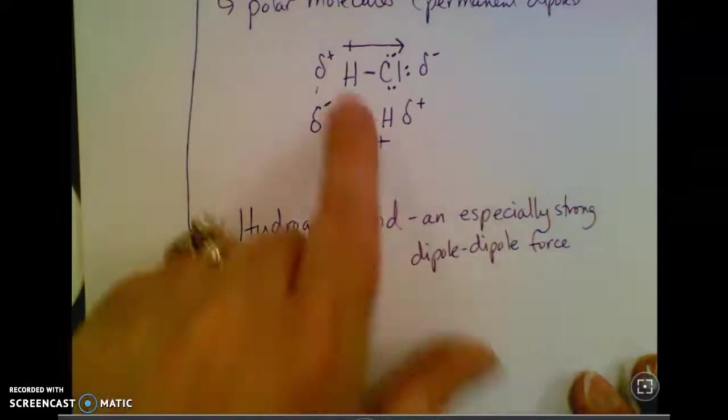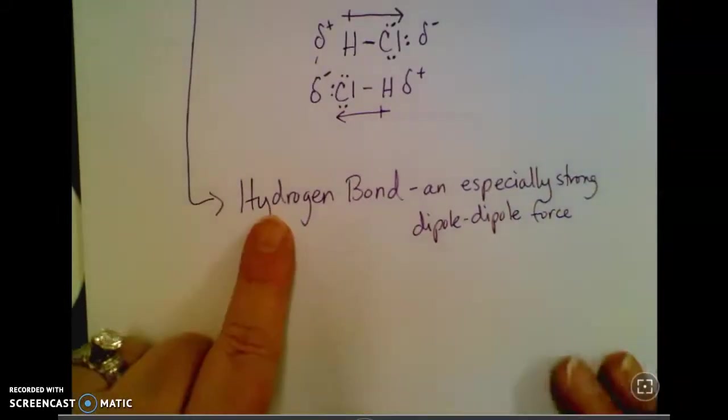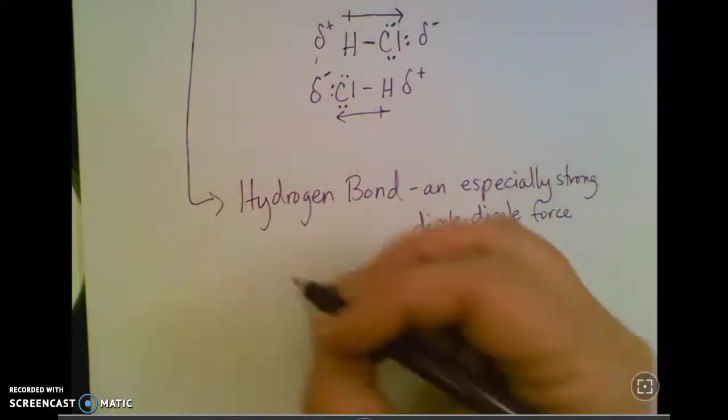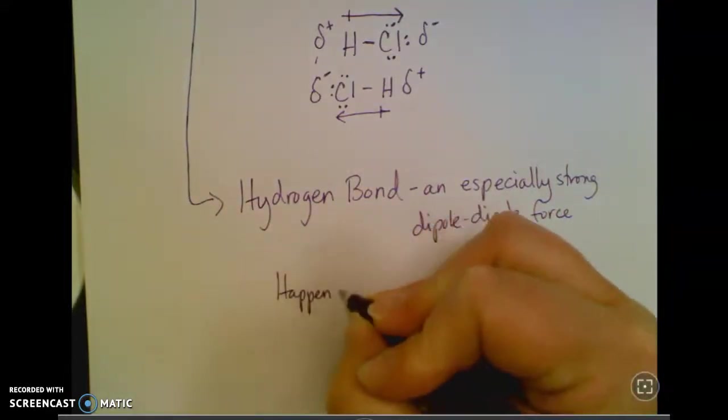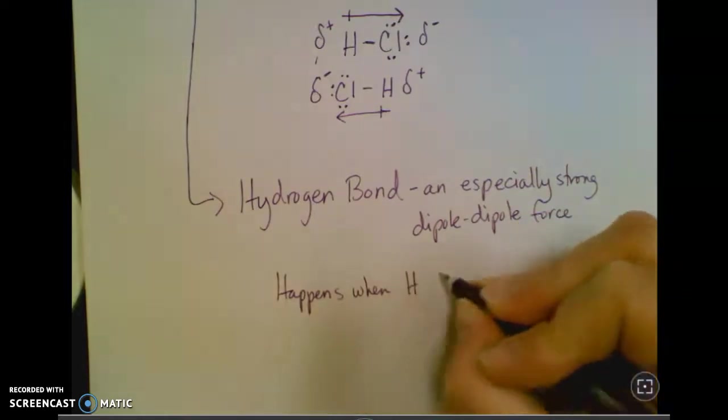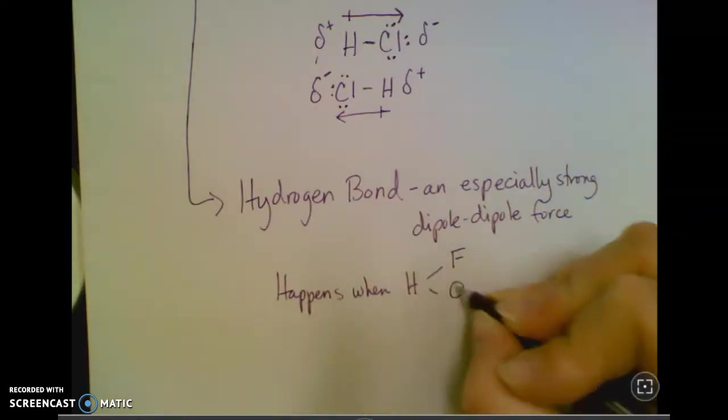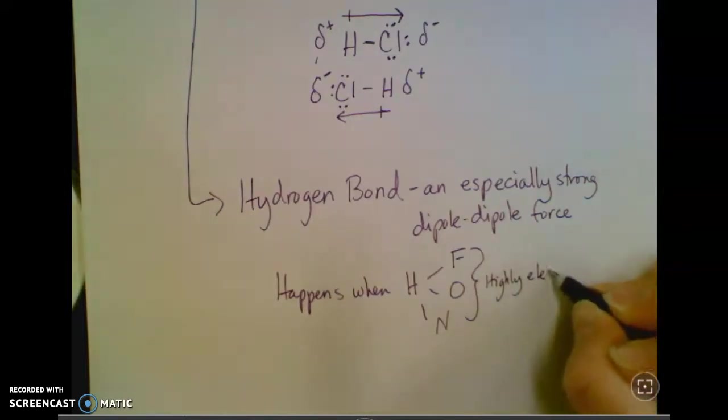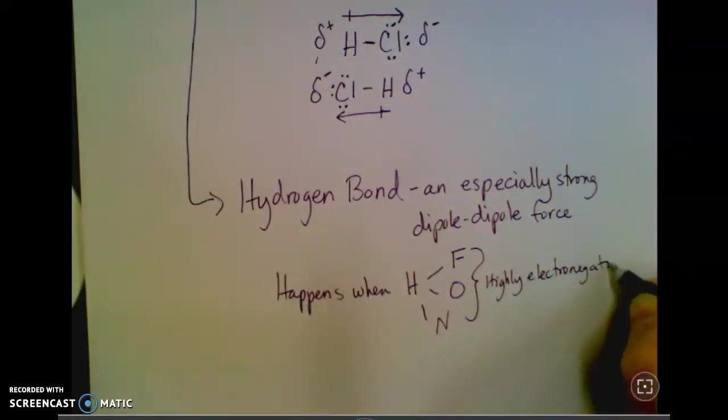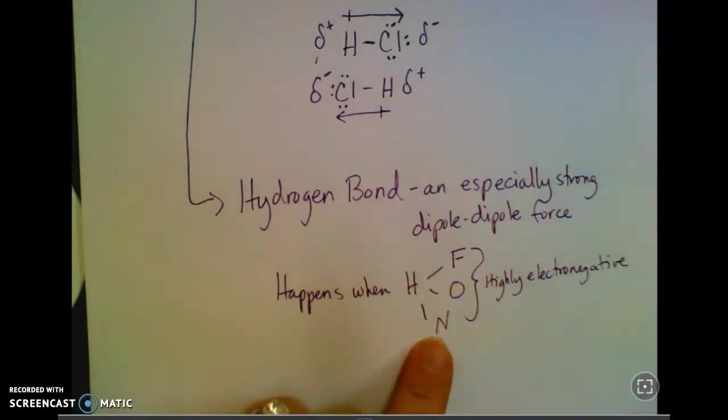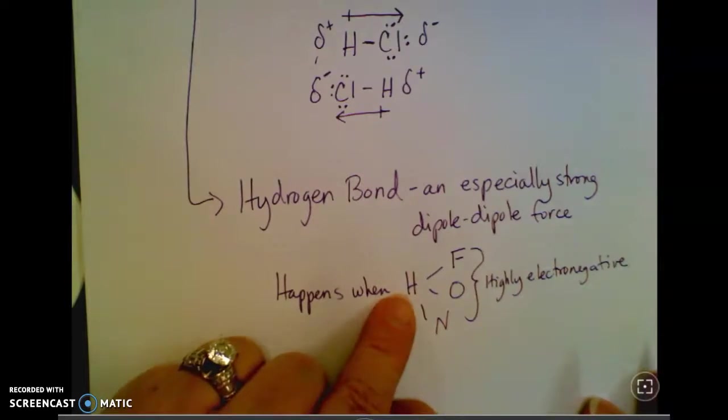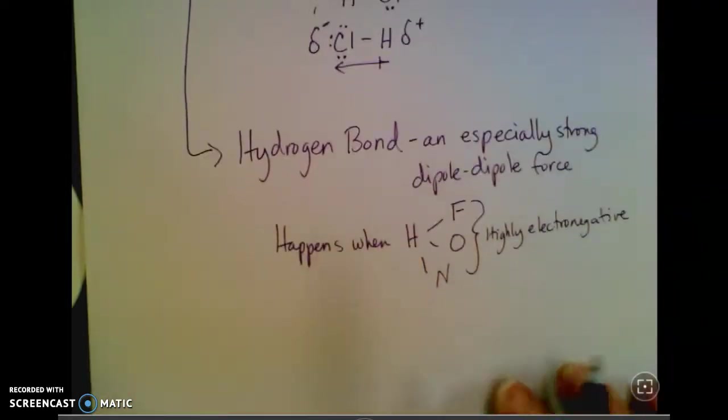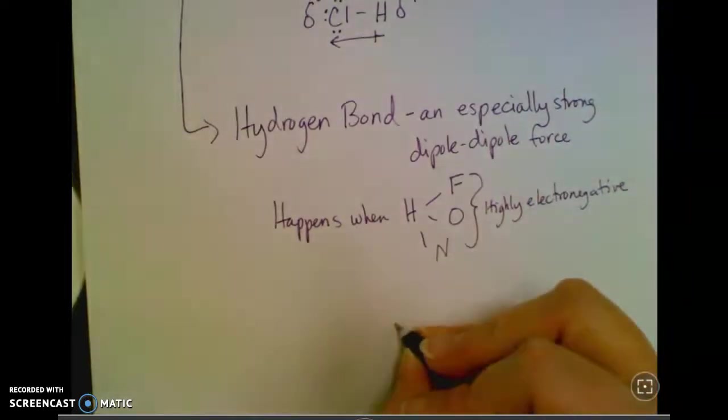It's not anything different from this, but it's just stronger than your run-of-the-mill dipole-dipole force. It's called hydrogen bonding because it happens when hydrogen is bonded with fluorine, oxygen, or nitrogen. These are very highly electronegative elements. Because they're so highly electronegative, they really pull hard on hydrogen's electron. Hydrogen only has that one little proton in the nucleus, so it can't pull back very hard.